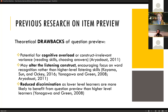Several drawbacks of question preview have also been proposed. Ariaduce 2011 suggested that item preview could overload working memory or introduce construct-irrelevant variance. Koyama, Sun, and Aki 2016 and Yanagawa and Green 2018 suggested that item preview might alter the listening construct — that when students can see questions before the lecture, they approach the text differently, doing a kind of aural scanning for word-level recognition rather than higher-level meaning mapping. Yanagawa and Green found that item preview reduced discrimination because it benefited lower-level learners more than higher-level learners.